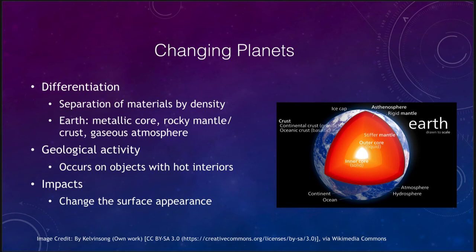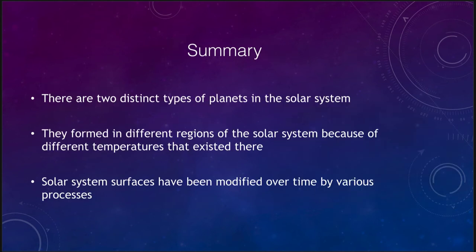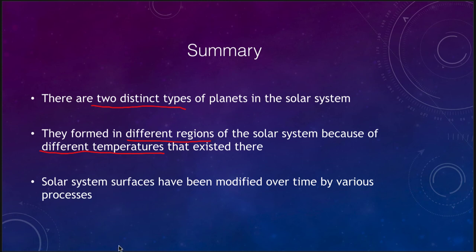To finish up with our summary: we discussed two distinct types of planets — the terrestrial planets (Earth-like planets) and the Jovian planets (Jupiter-like planets). They formed in different regions of the solar system because of different temperatures. Rocky and metallic planets formed close to the sun, giving us the terrestrial planets, while gaseous and icy planets formed further away where it was much colder. Solar system surfaces have been modified over time by various processes, including cratering and geological activity.